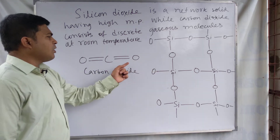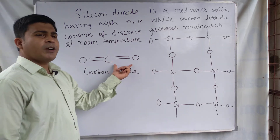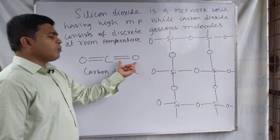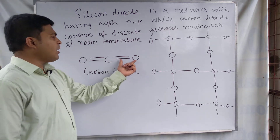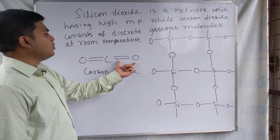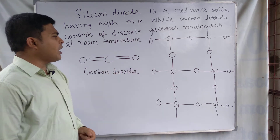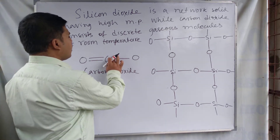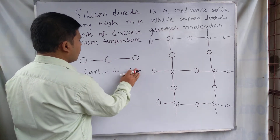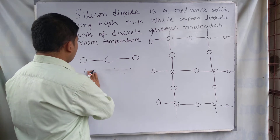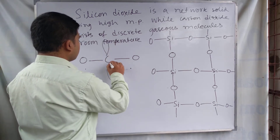For carbon, it is not possible to form that type of network structure. The p orbitals of carbon and oxygen come closer and form pi bonding through lateral overlap — meaning the p orbital of oxygen and the p orbital of carbon undergo lateral overlapping. We can see this in the orbital structure of carbon dioxide.